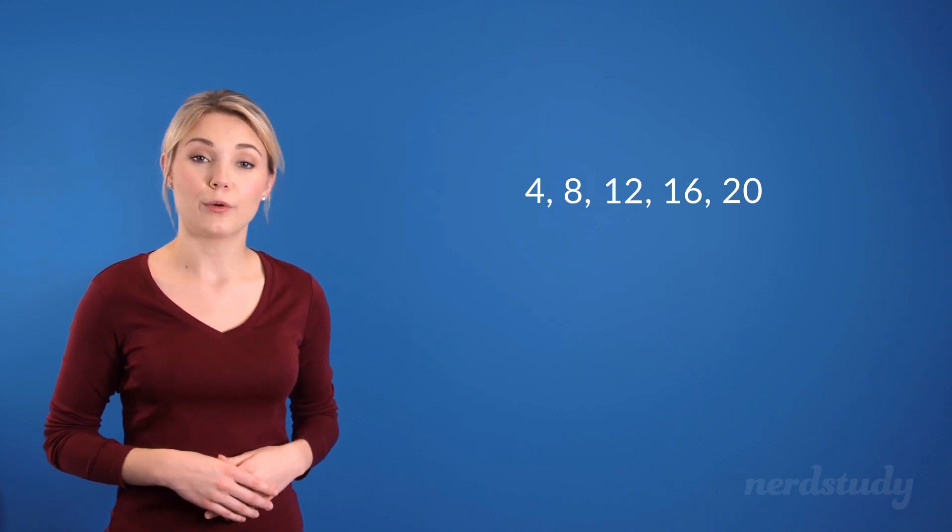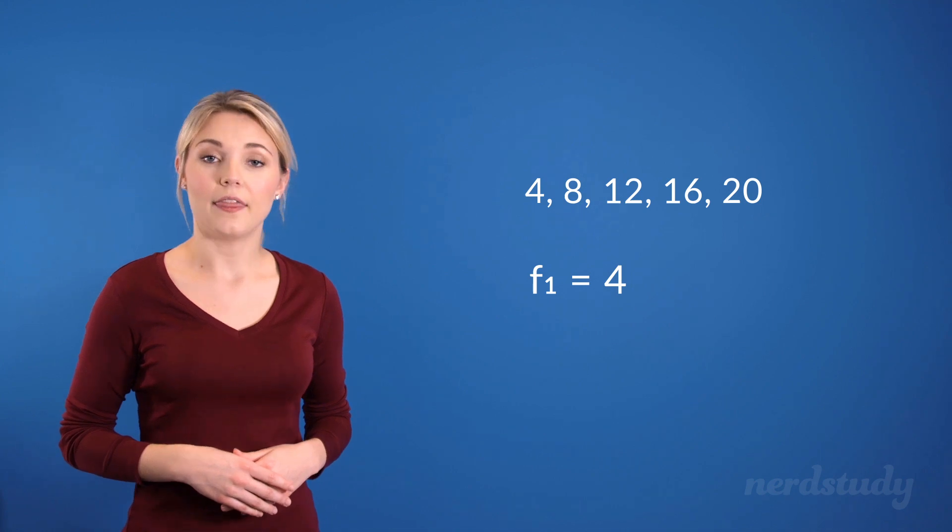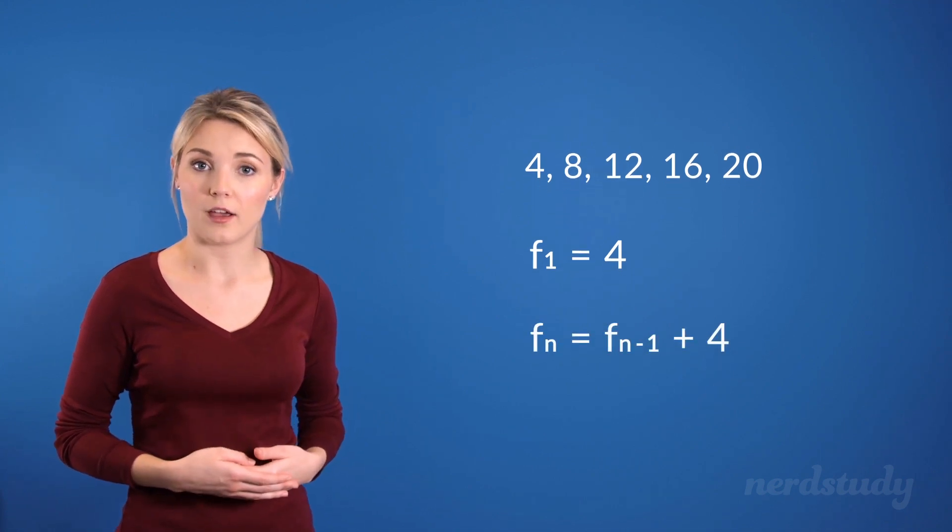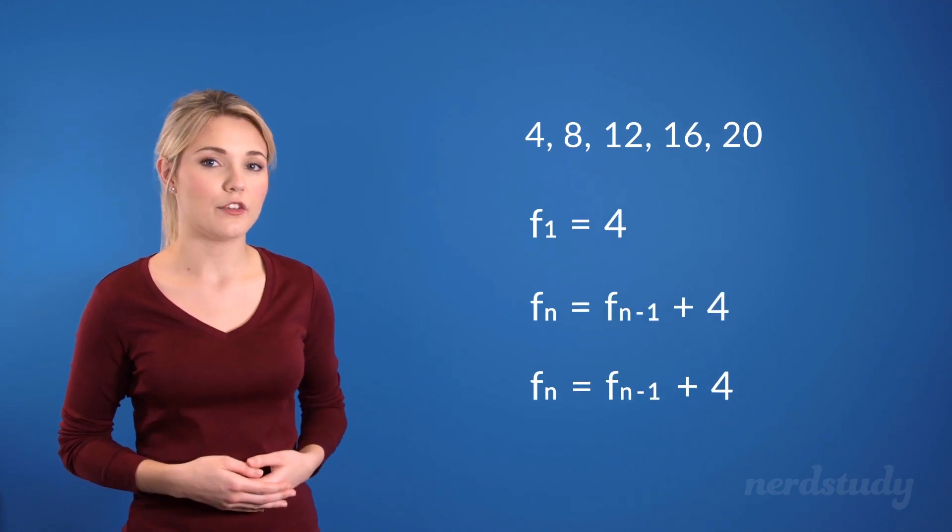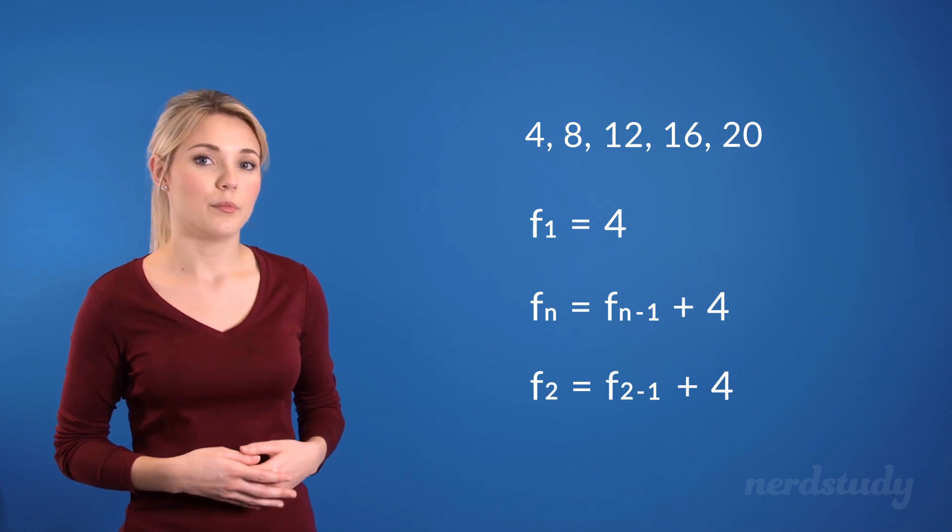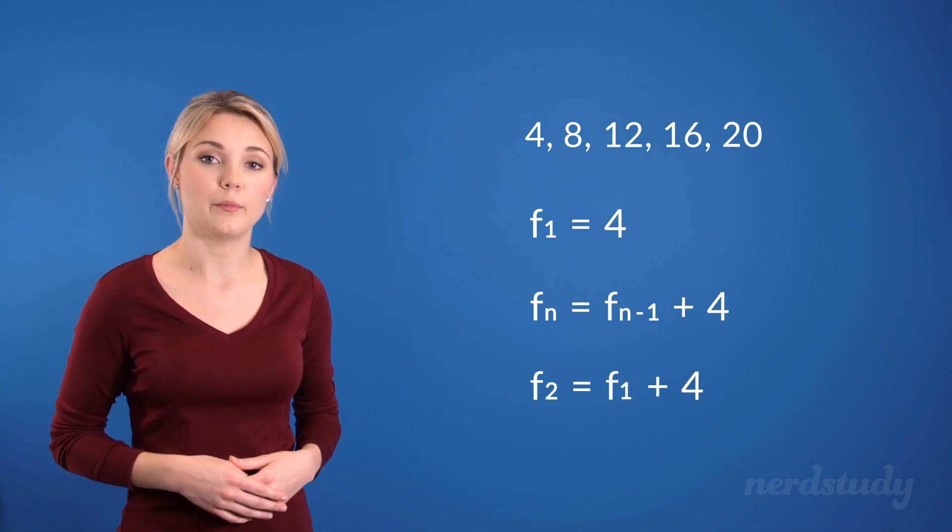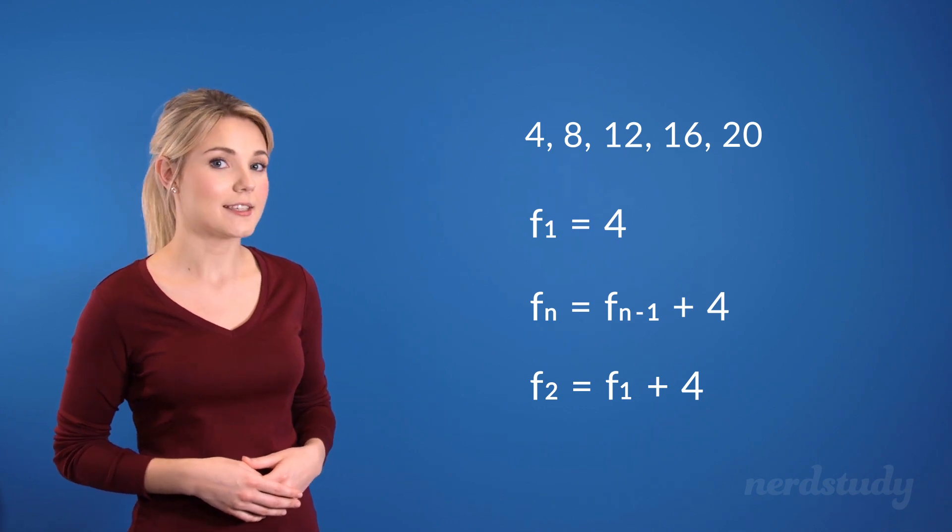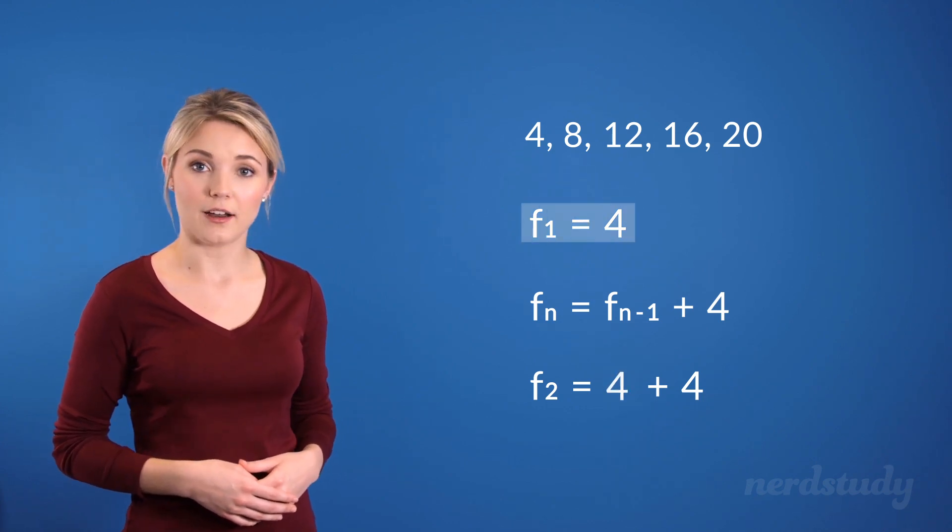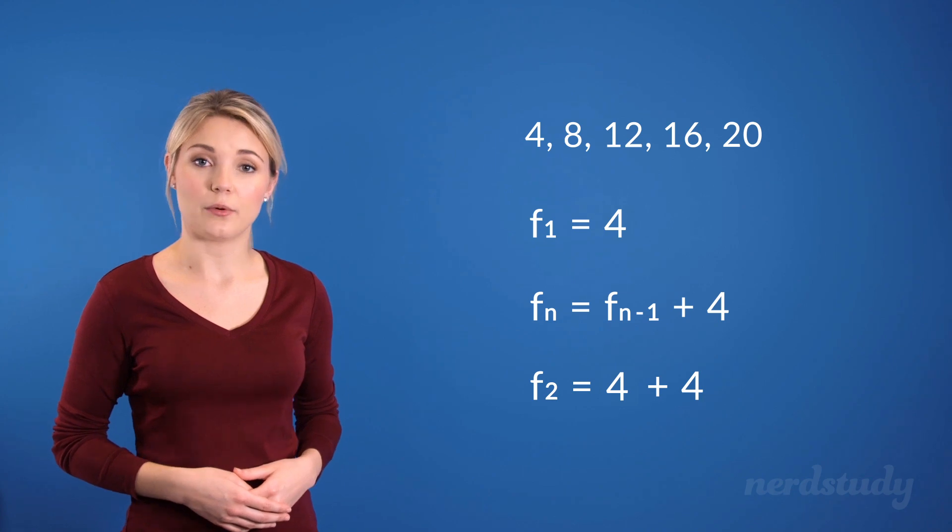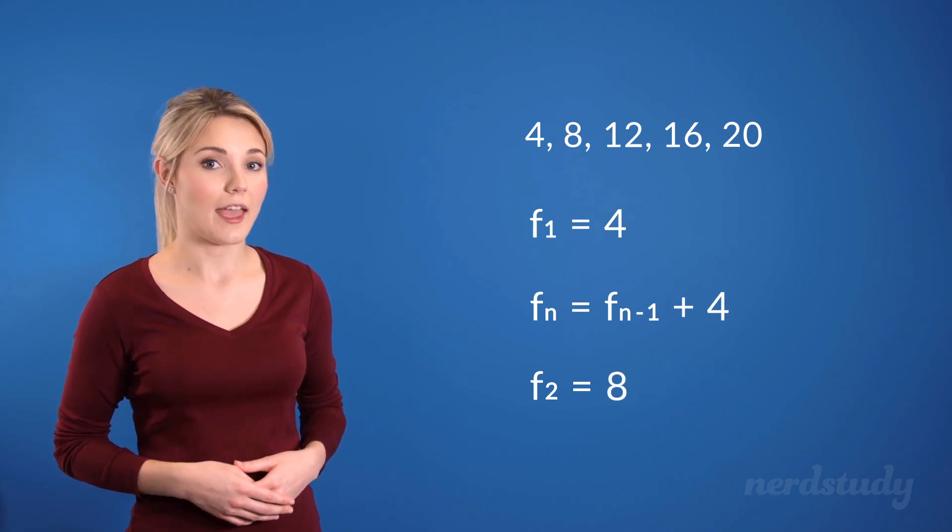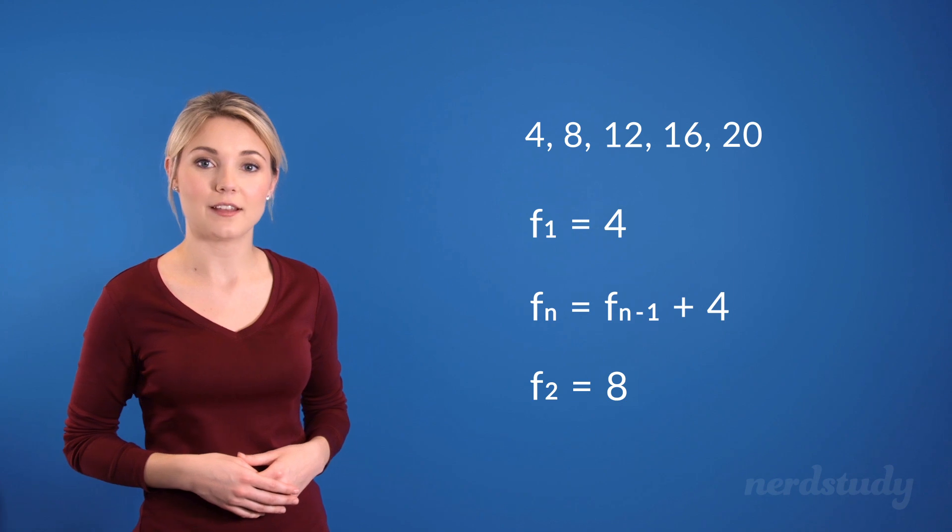So in this case, we would write down the first term as f of 1 equals 4, and then we would construct the following formula. So notice how if we had f of 2, then we would get f of 2 minus 1, which equals f of 1 plus 4. And since f of 1 is equal to 4, f of 2 would be equal to 8. So again, this is the recursive way to represent this sequence.